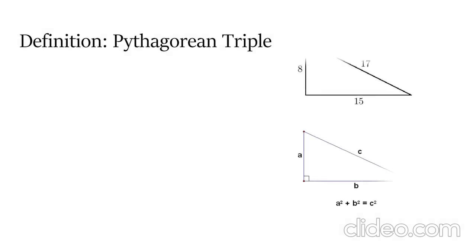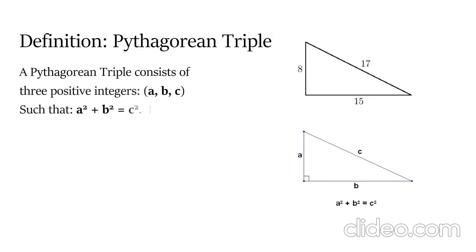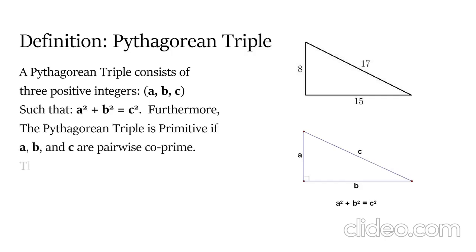This is a Pythagorean triple. It's very similar to the Pythagorean theorem. A Pythagorean triple consists of three positive integers a, b, and c such that a squared plus b squared equals c squared.